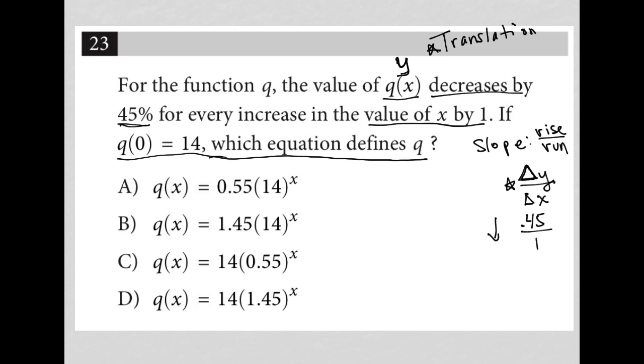So q(0), that means when I replace x with 0, and I also replace x with 0 here, does answer choice A give me a 14? Because that's what it says I should have. Well, 14 to the 0 power is just 1, and then I'd have 0.55 times 1, which is not 14. So A is gone.